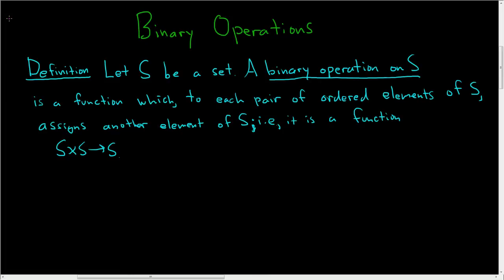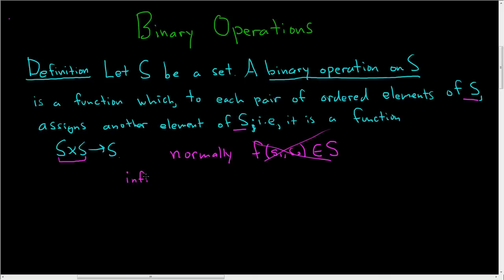In this video we're going to talk about binary operations. A binary operation is just a function which takes a pair of elements in a set S and produces another element of S. Normally we write functions as f(s1, s2), but when talking about binary operations we use infix notation: s1 ★ s2, where the result also resides inside S.